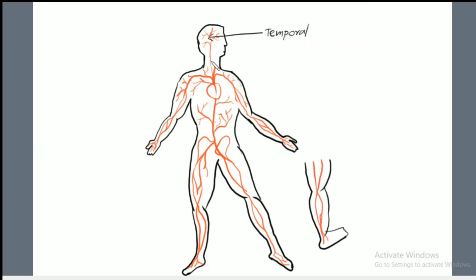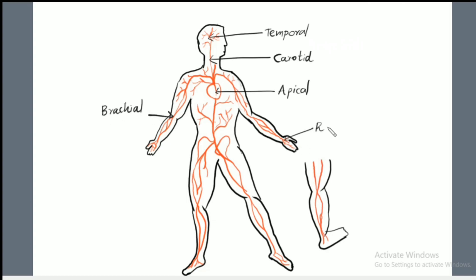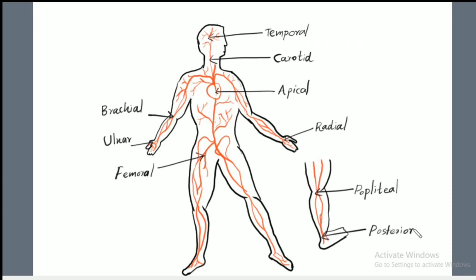The common pulse sites in the human body are: temporal, carotid, apical, brachial, radial, ulnar, femoral, popliteal, posterior tibial, and dorsalis pedis.